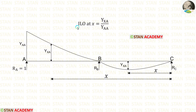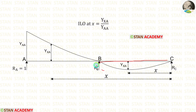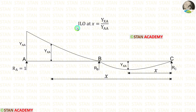Now let us see the formula to calculate the influence line ordinate at x. We have applied a unit load at point A. Because of the unit load, deflections are developed in the beam. At point A, we are having the deflection YAA. In span AB, the deflection will be above the span. For span BC, the deflection will be below the span. Since we have 2 spans, we have to make 2 sections, one in span BC and one in span AB. Both sections should be made at distance x. Then we calculate YXA in each span. The formula for influence line ordinate at x is equal to YXA divided by YAA.